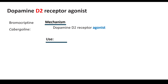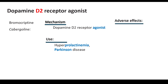These drugs are used in the treatment of two conditions that start with P: one is hyperprolactinemia, and the other is Parkinson's disease. The adverse effects include gastrointestinal disturbances, headache, and vasospasm.